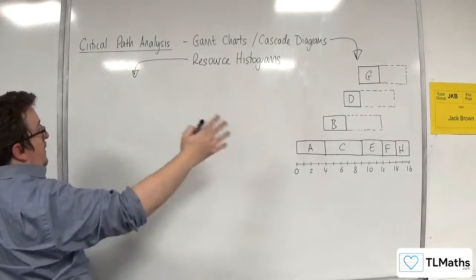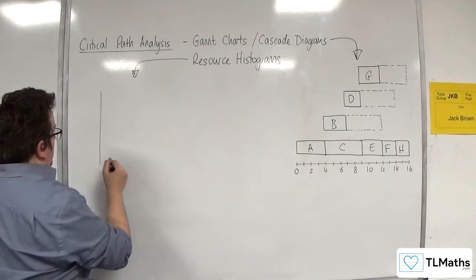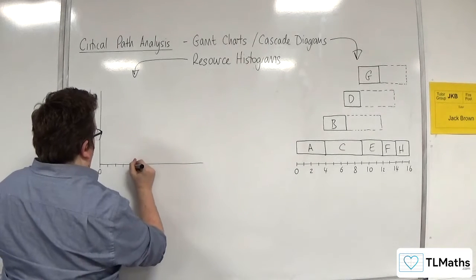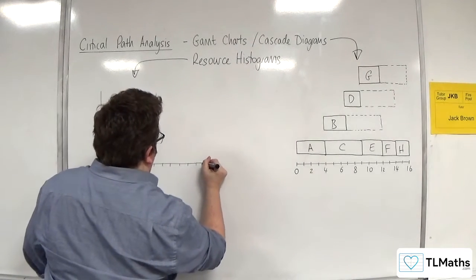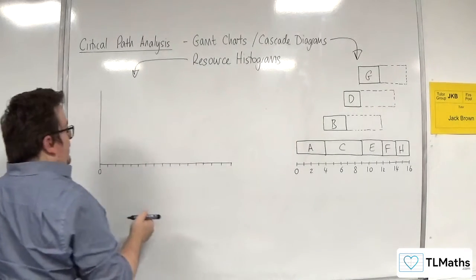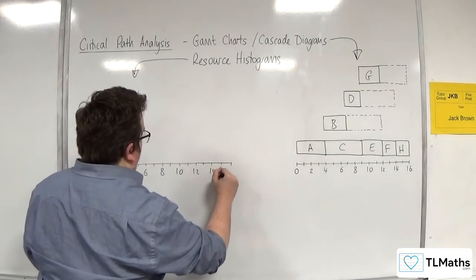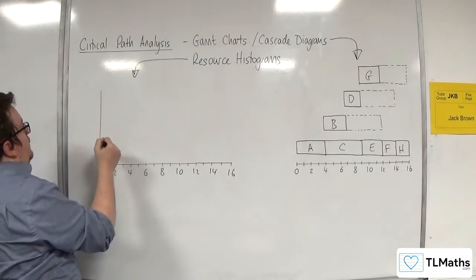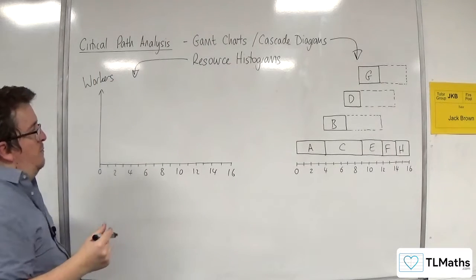So the resource histogram looks very similar to this, except it does actually have a vertical axis as well. So we're still going to have 0, 1, 2, 3, 4, 5, 6, 7, 8, 9, 10, 11, 12, 13, 14, 15, 16. So 2, 4, 6, 8, 10, 12, 14, 16. So we've got a time axis. And up here, we're going to have number of workers. So this is essentially your number of workers axis.